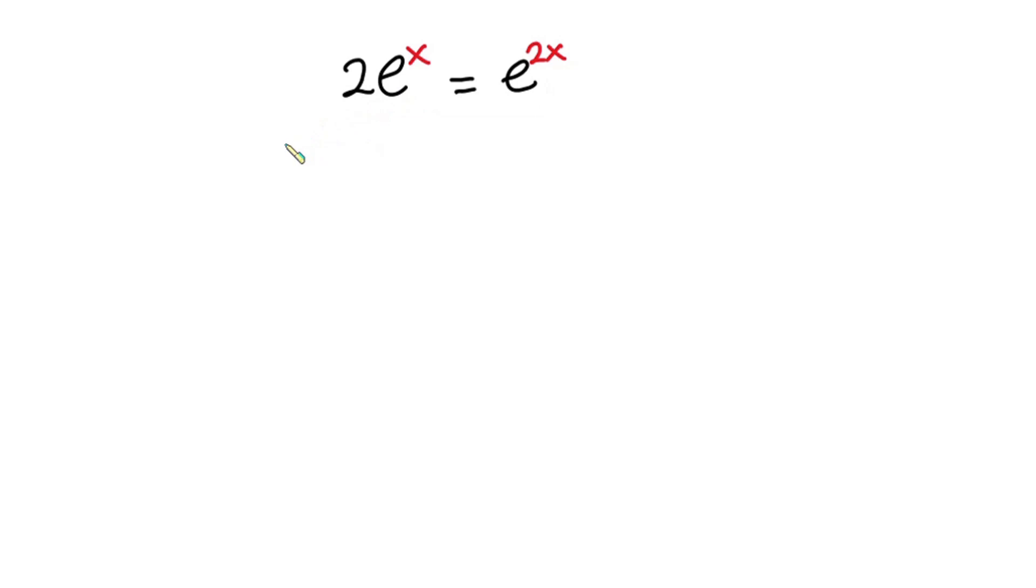I'll just write this equation as 2 times e to the power x is equal to e to the power x or to the power 2. Because from indices, if I have a to the power m times n, this is the same as a to the power m or to the power n. So I just applied the same idea over here.